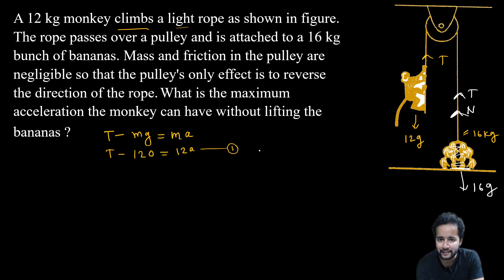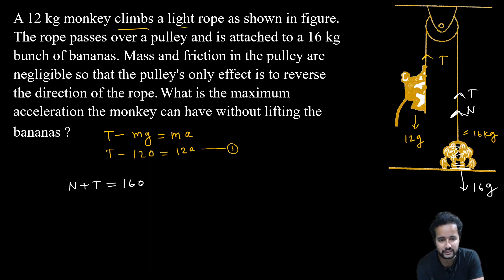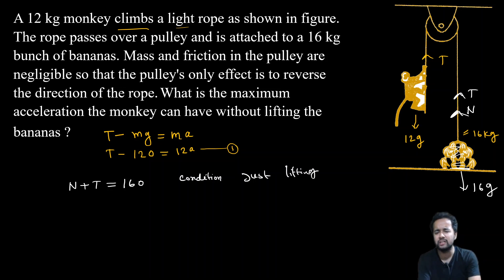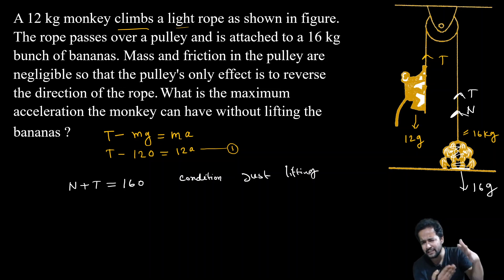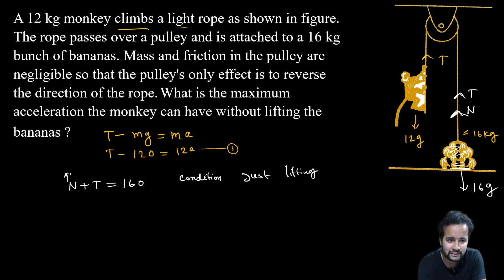Toh is banana ka equation likhein toh: N plus T equals to MG, matlab 160 N — kyunki banana ka mass 16 kg aur g = 10. Ab hum aise condition satisfy karaenge ki banana just lifting ho. Jab banana just upar uthega, toh uska Normal force kitna ho jayega?